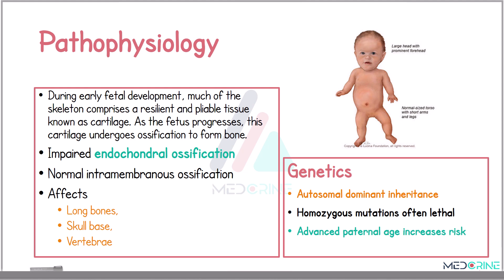As noted previously, achondroplasia is inherited in an autosomal dominant pattern. If both parents are affected, there is a 25% chance of a homozygous mutation, which is usually lethal. Additionally, advanced paternal age has been associated with an increased risk of new mutations responsible for achondroplasia.